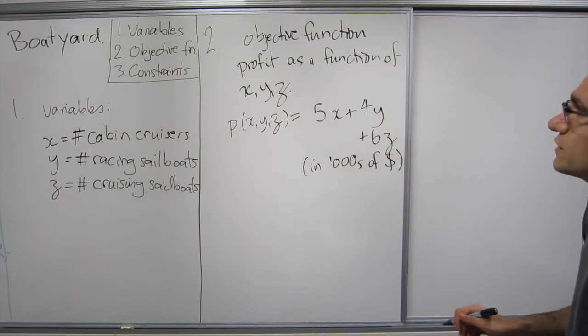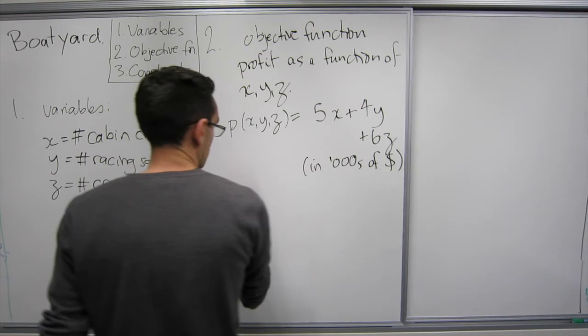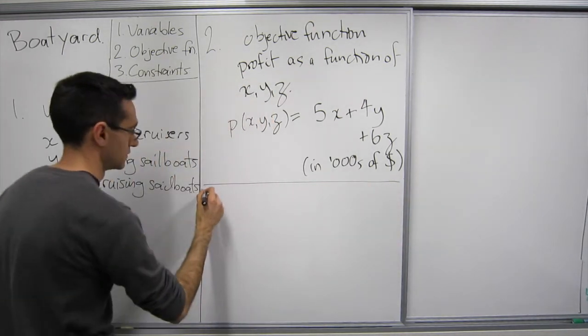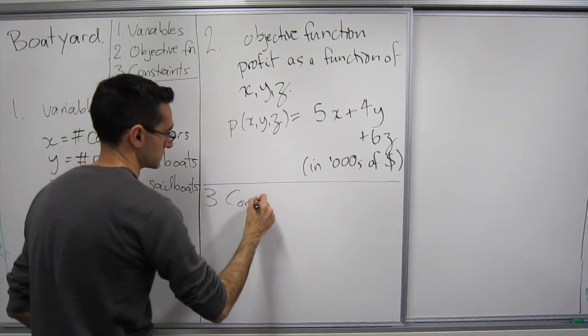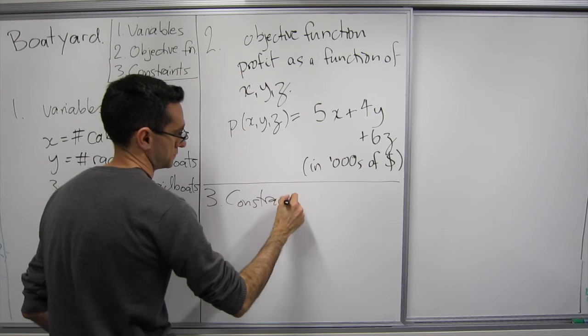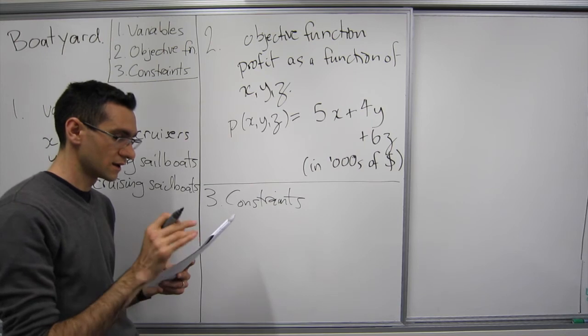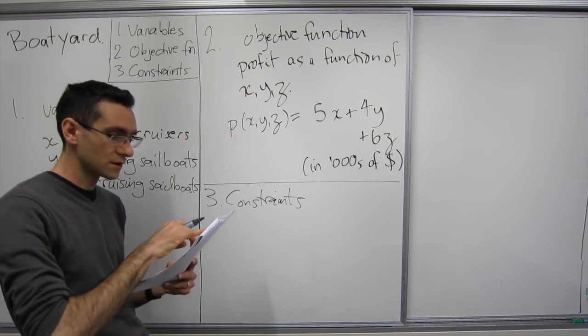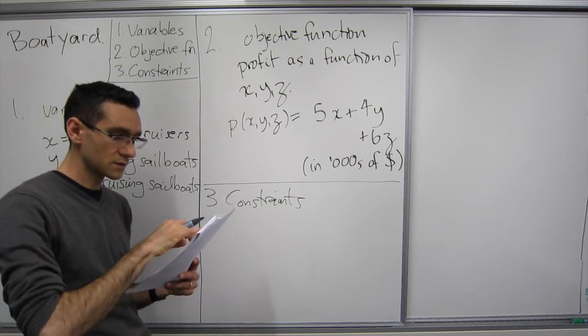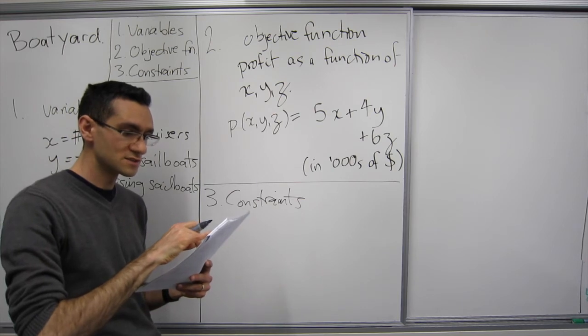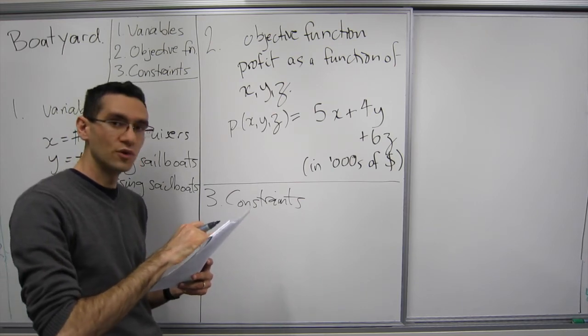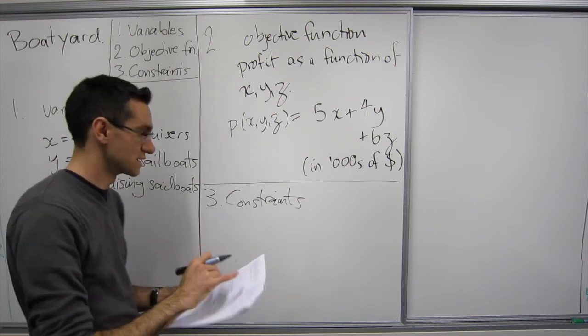Okay so now we need to find the constraints. So two of the things that we need to look at if we're looking at the problem, it says because of space considerations the yard can finish no more than 25 boats in one year.